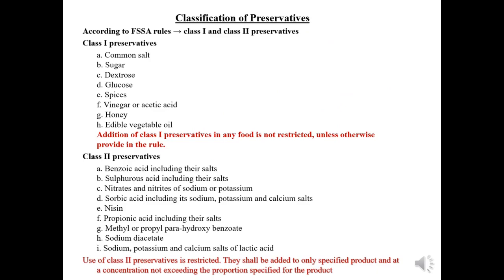Class one and class two preservatives. Class one preservatives include common salt, sugar, dextrose, glucose, spices, vinegar or acetic acid, honey, edible vegetable oil, etc., which are non-toxic to the human body. Addition of class one preservatives in any food is not restricted unless otherwise provided in the rules.